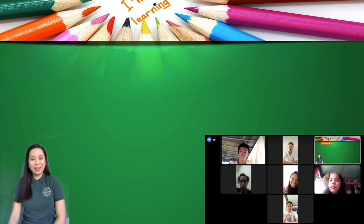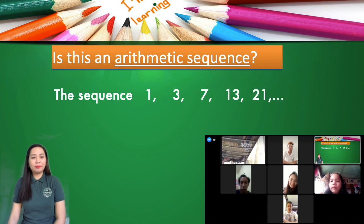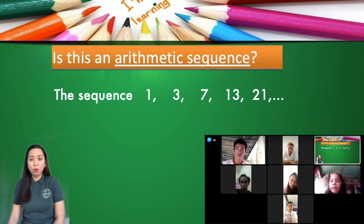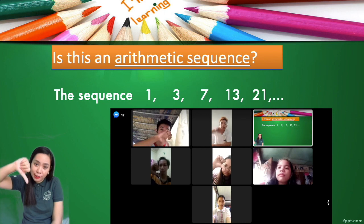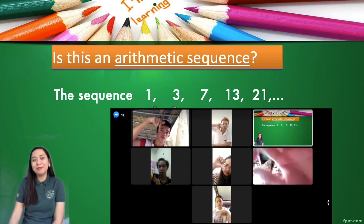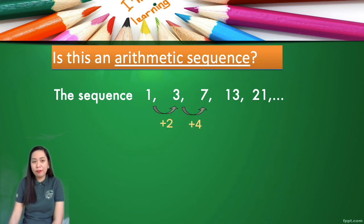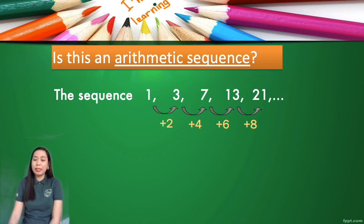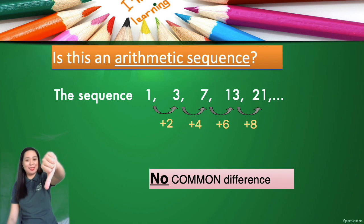Let's have another example. What about 1, 3, 7, 13, and 21 — arithmetic sequence or not? From 1 to 3, add 2. From 3 to 7, add 4. From 7 to 13, add 6. From 13 to 21, add 8. There is no common difference, therefore this is not an arithmetic sequence.